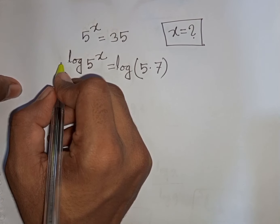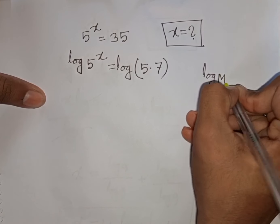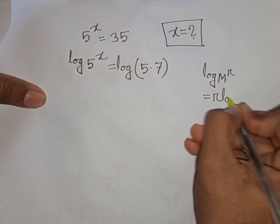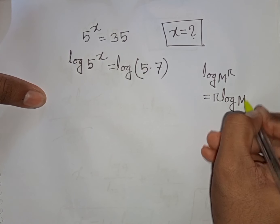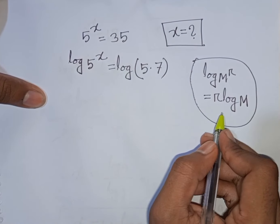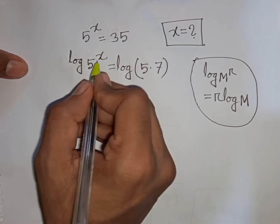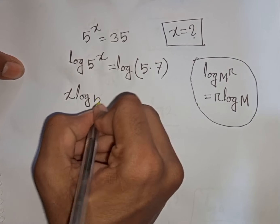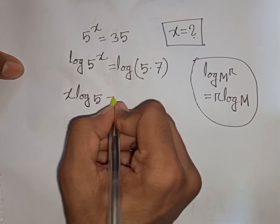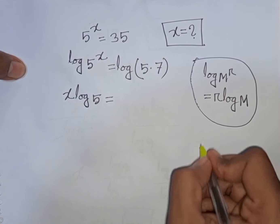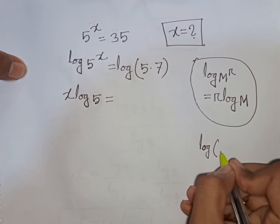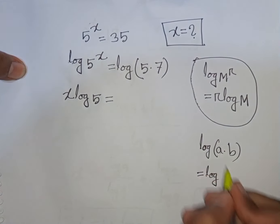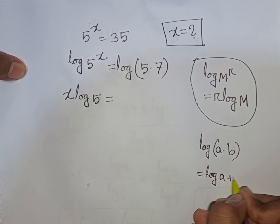Now this power x will move to the base according to the rule: log m power r is equal to r log m. So according to this rule, the power x moves to the front, giving x log 5 on the left. On the right, we apply the rule that log of a times b is equal to log a plus log b.